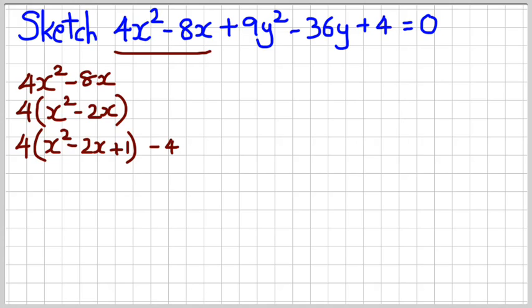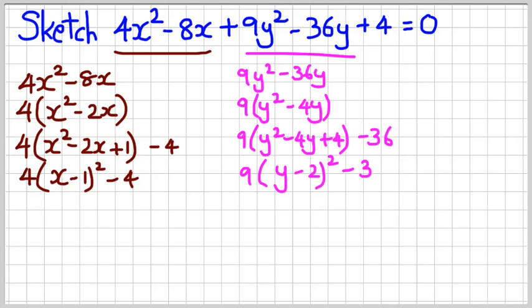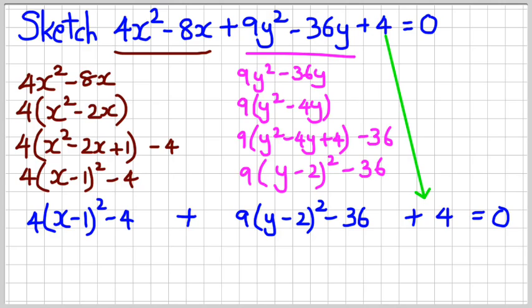You should have had enough practice completing the square by now, so I'm just going to run through this quickly. I've done the x part and I'm working through the y now. Bringing everything together, having completed both the x and y parts, from this point onwards it's basically just simplifying and rearranging — moving the constant by itself to the right-hand side.